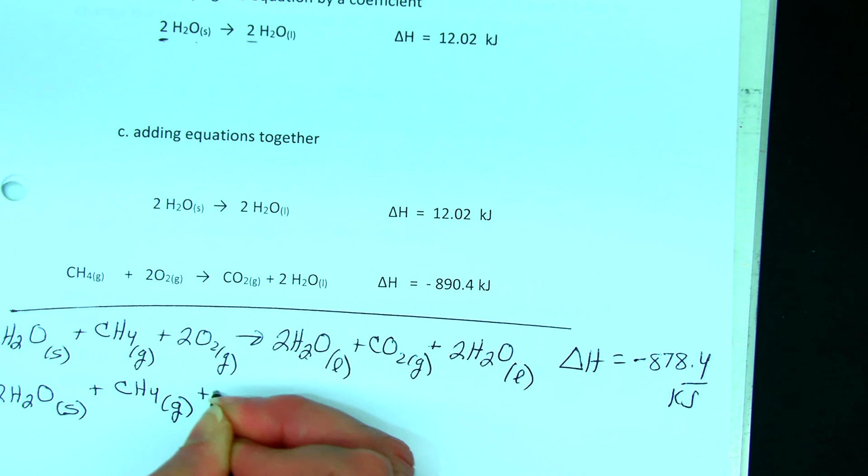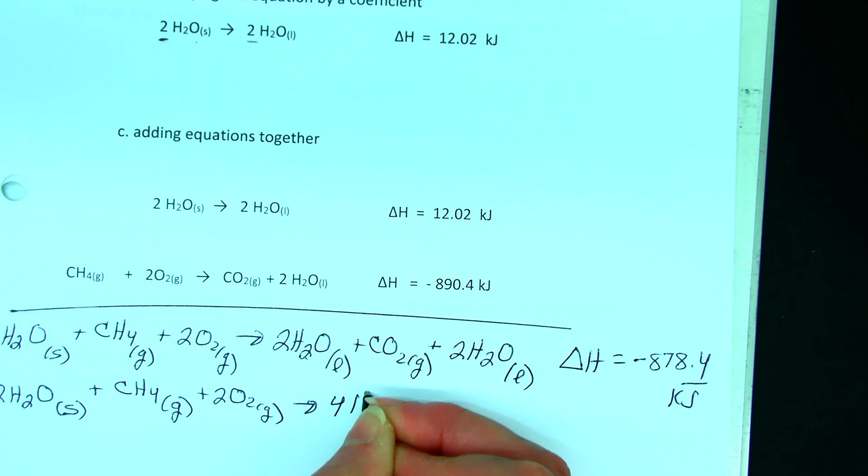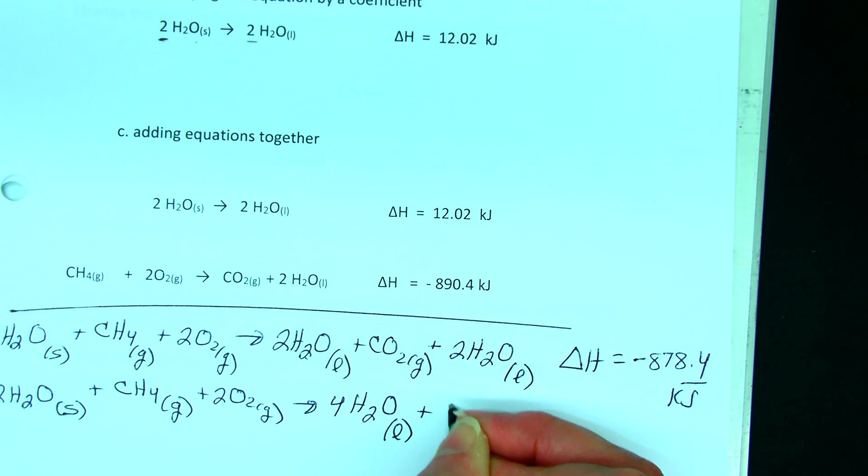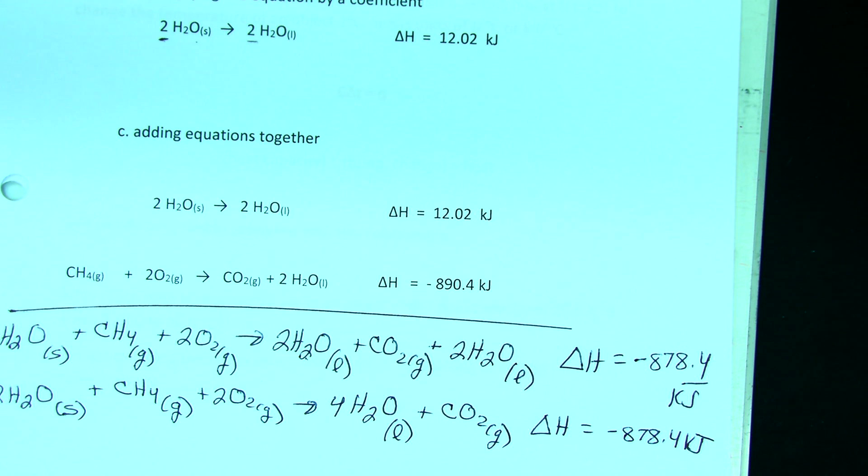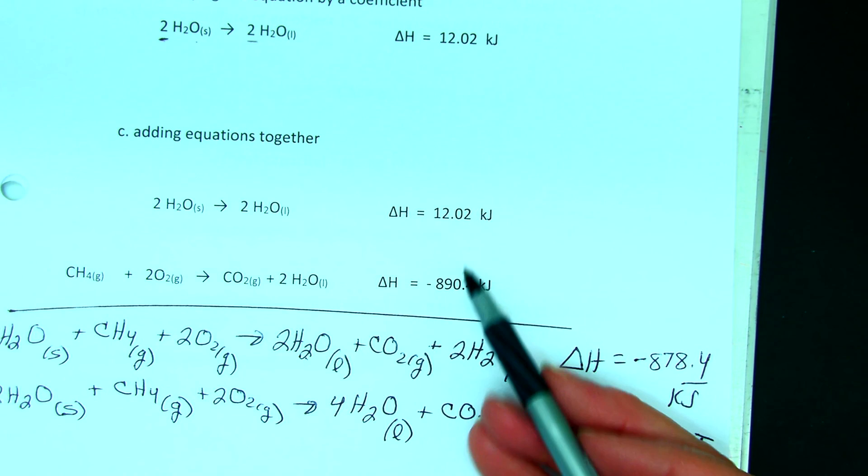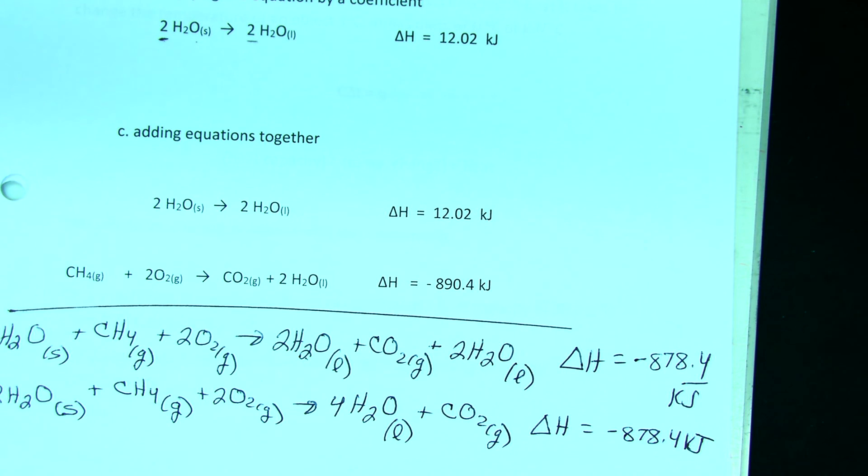CH4 gas, plus 2 O2 gas gives me 4 moles of water liquid plus carbon dioxide gas and my delta H is negative 878.4 kilojoules. So all I've done is add together two thermochemical equations and when I added the products and the reactants, I also added in the enthalpies. And you make sure when you're adding that you watch the signs because it's really easy to slip a sign.